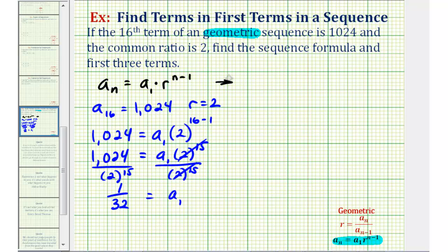Which means our formula for the sequence must be a sub n equals a sub one, which we just found to be one over 32, times r, which we know is two, raised to the n minus one power.